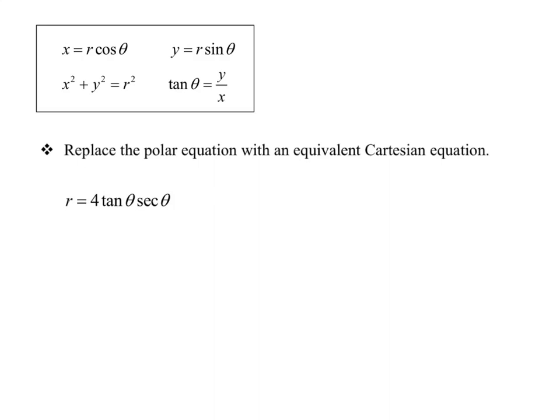In this first example, we want to replace the polar equation with an equivalent Cartesian equation, meaning we want to switch to x and y. First, let's look at tangent of theta — we have a direct identity for that: it's y over x.